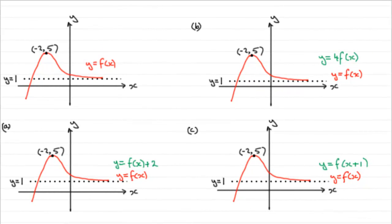Hi. Now in this question, what I've done is I've copied the graph that we're given of y equals f of x, and we're told it has this maximum stationary point at minus 2, 5, and an asymptote y equals 1.